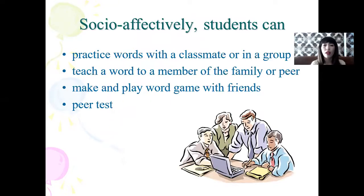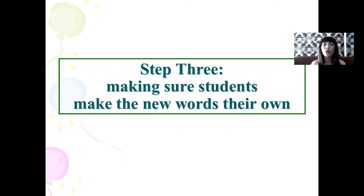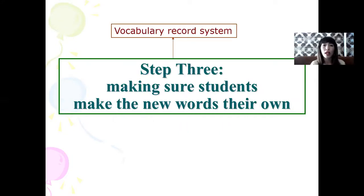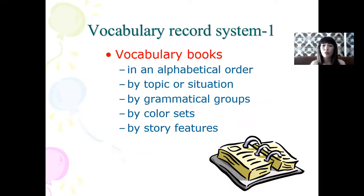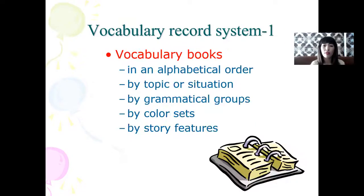Review games can be word search games, labeling, crossword, bingo, dominoes, puzzles, and charts. Step three: make sure students make the words their own. Use a vocabulary code system — personalizing the new words. Vocabulary books can be organized in alphabetical order, by topical situation, grammatical groups, by color set, or by story features. The vocabulary code system includes marking word stress, adding pictures, putting one's translation, adding synonyms, mapping word families.